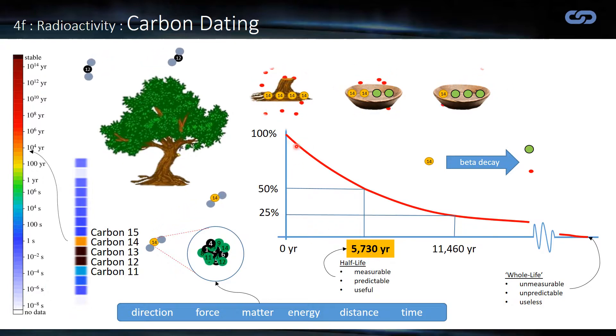Now, obviously, I've taken a very obvious number there, but it could be any percentage. It could be 47, 15, whatever you like. 25 would obviously be two half-lives. So we can use this graph to date an object.